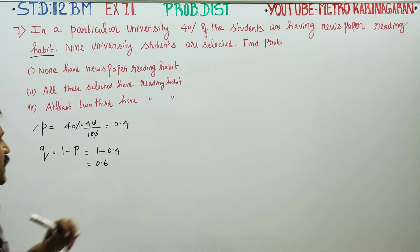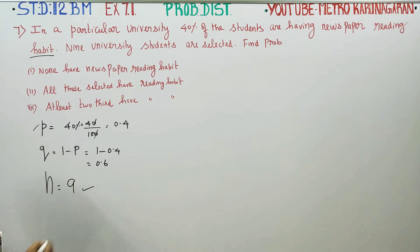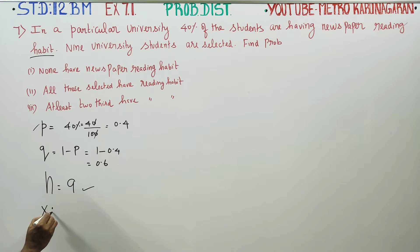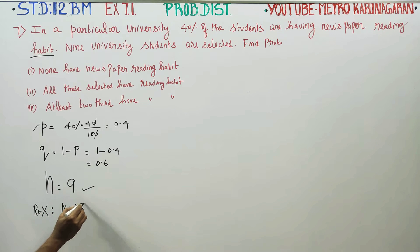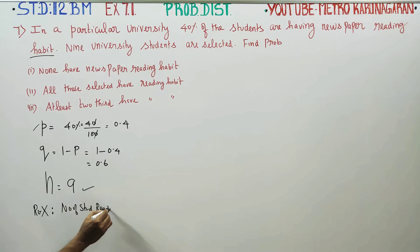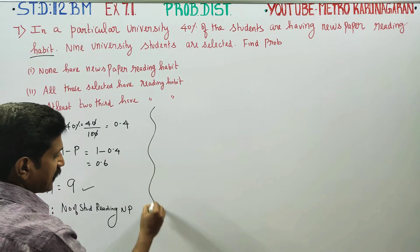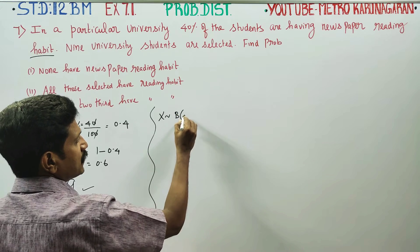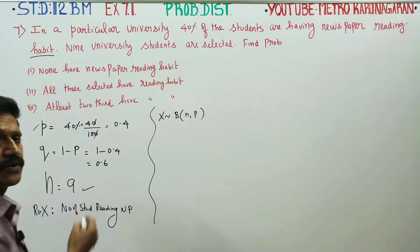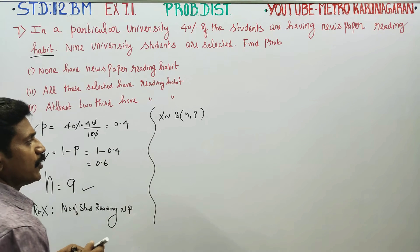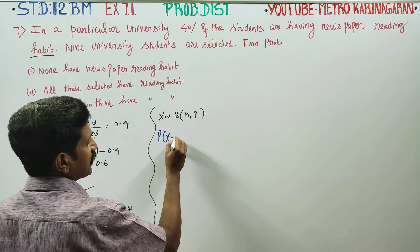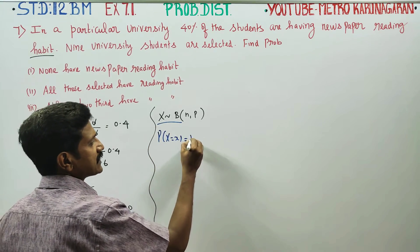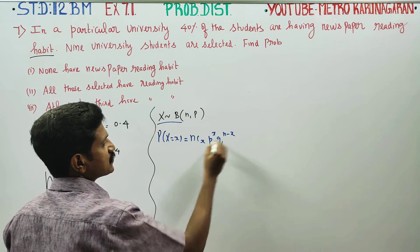Nine university students are selected, so n is equal to 9. X, the number of students reading newspaper, follows a binomial distribution with parameters n and p. The binomial distribution formula is: probability of X equals x is equal to nCx times p power x times q power n minus x.